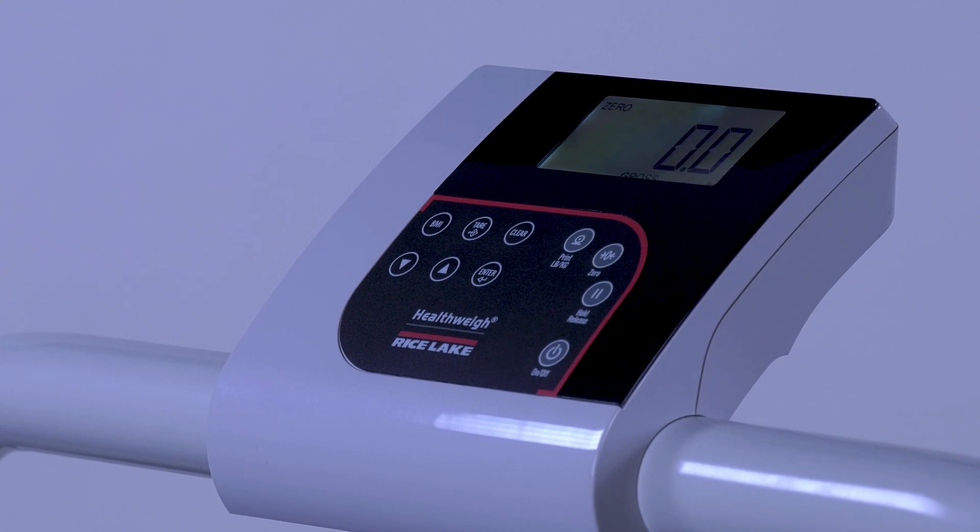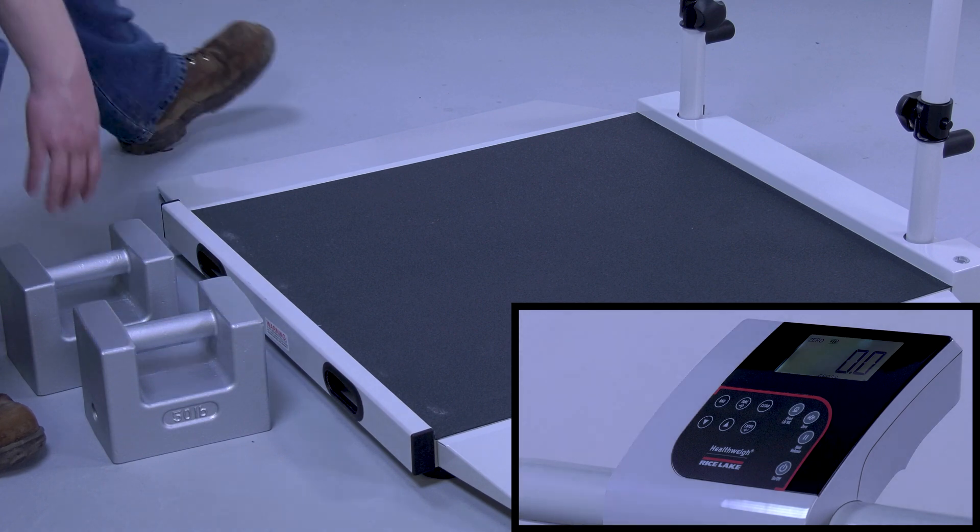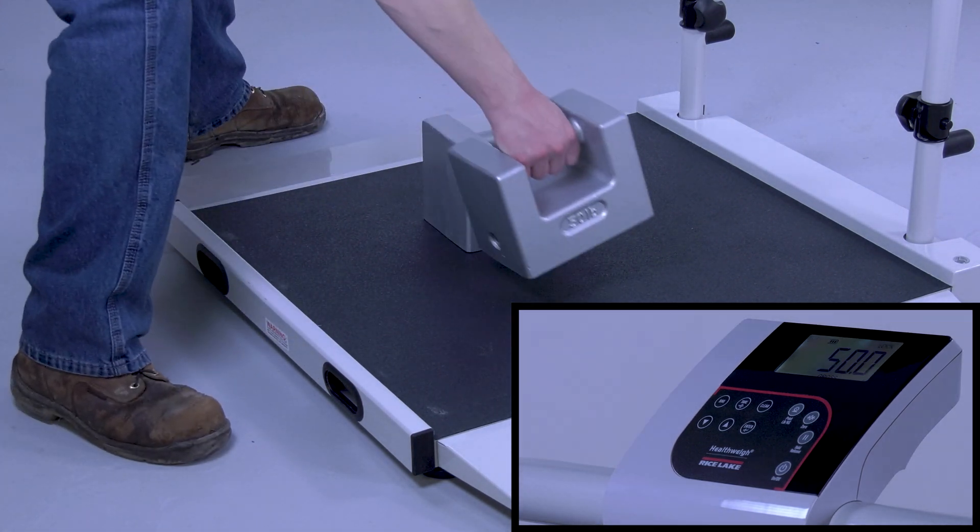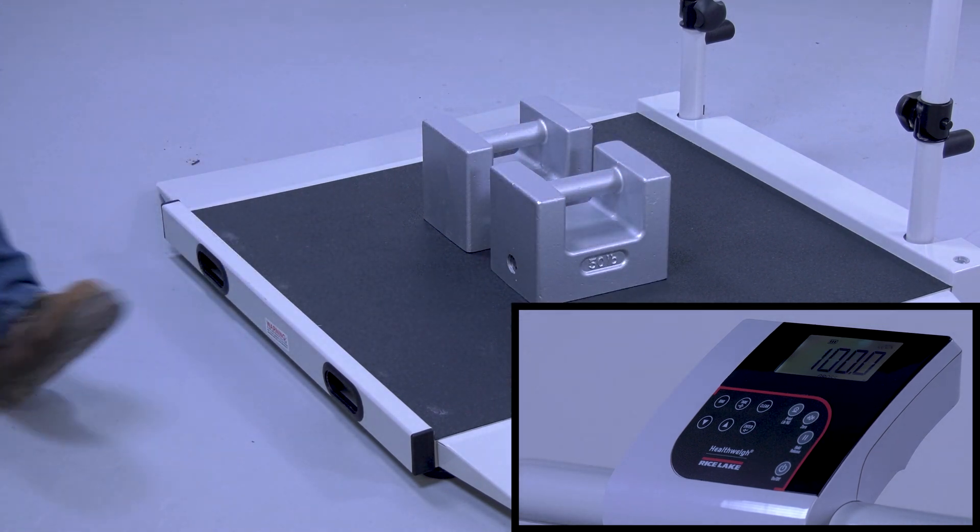You have now calibrated your medical scale. Place your calibration weights back on the scale to verify it is reading correctly. In this example, the scale displays 100 pounds.